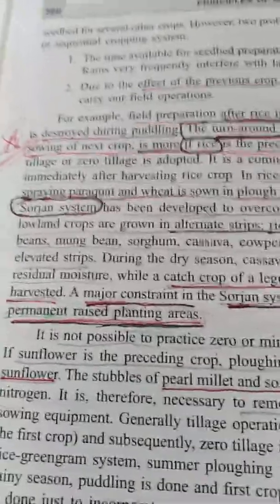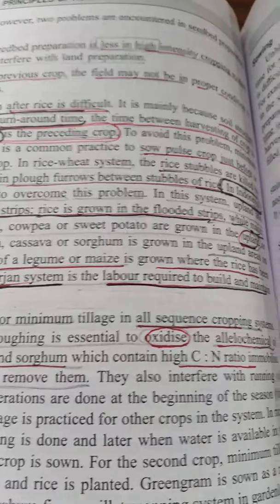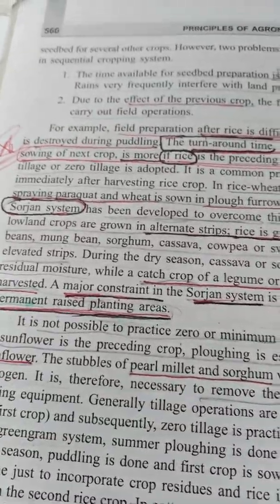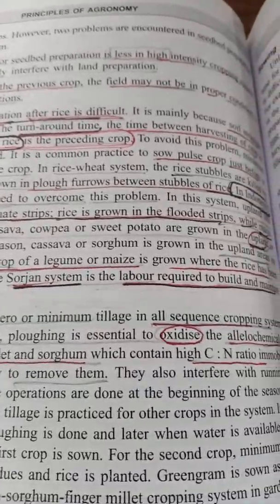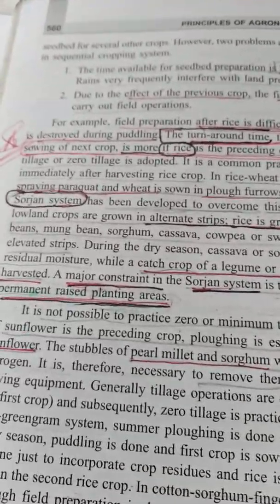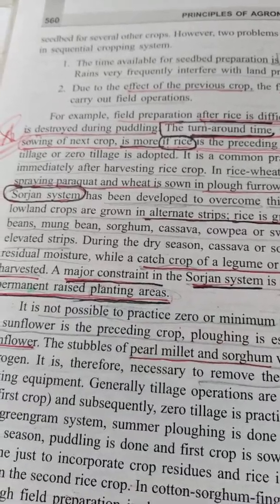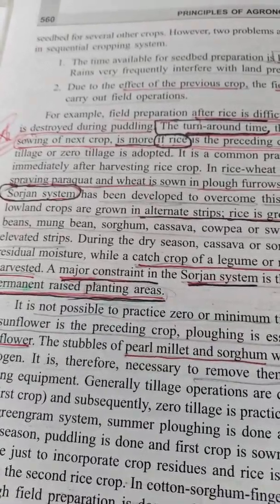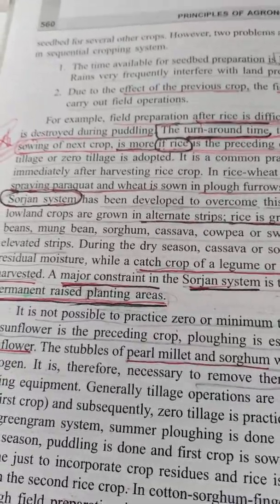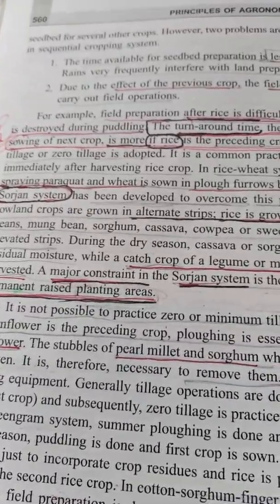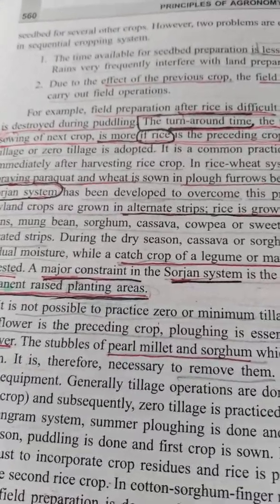The Srojan system was developed to overcome flooding problems. In this system, upland and lowland crops are grown in alternate strips. Rice is grown in flooded strips, and bean, mung bean, sorghum, cassava, cowpea, and sweet potato are grown in the upland strips. The Srojan system was developed in Indonesia. Please remember it.